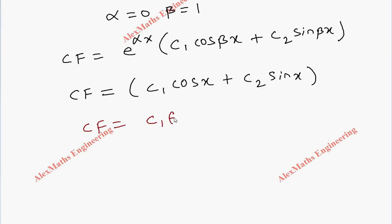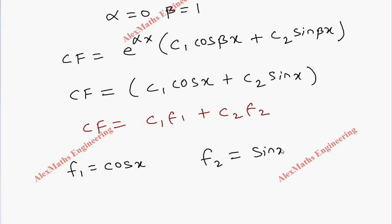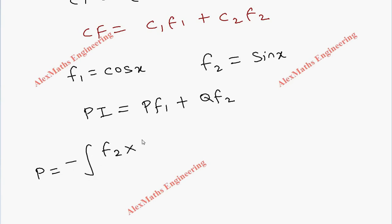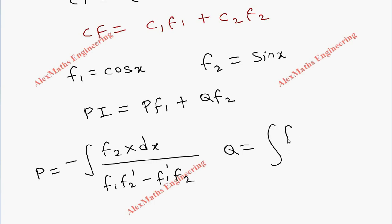We compare this complementary function with the general form c₁f₁ + c₂f₂, so f₁ = cos x and f₂ = sin x. Using these, the particular integral is p·f₁ + q·f₂, where p = -∫(f₂ · X dx) / (f₁f₂' - f₁'f₂) and q = ∫(f₁ · X dx) / (f₁f₂' - f₁'f₂).